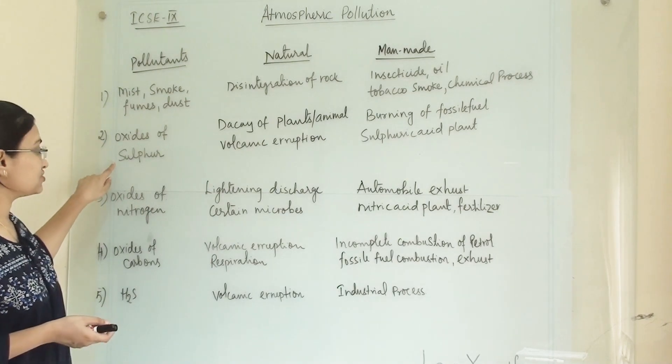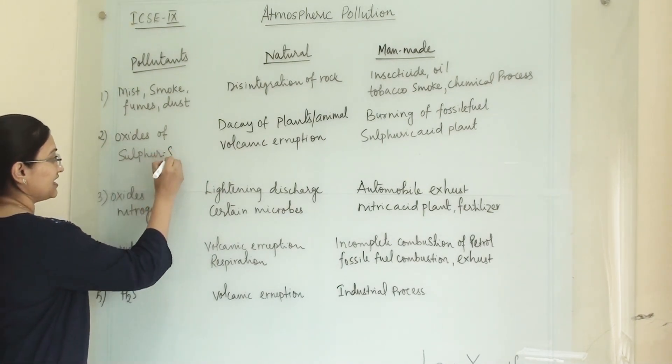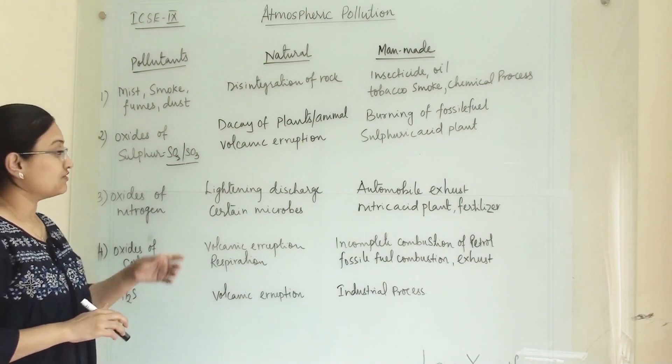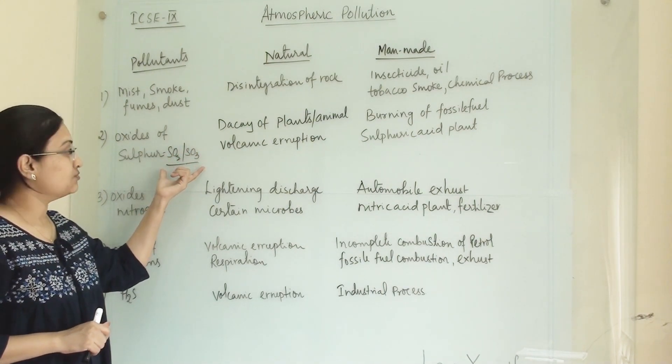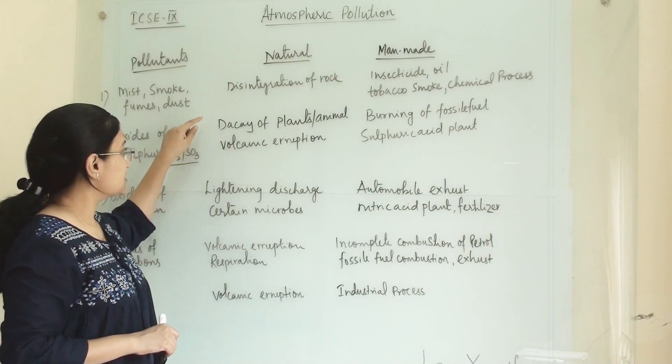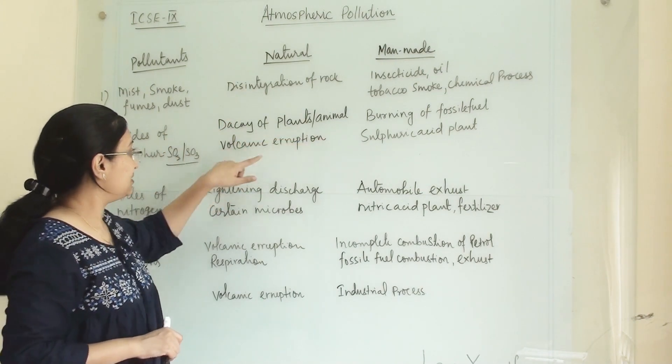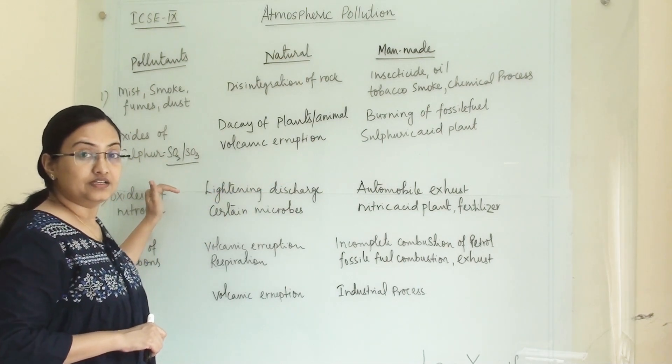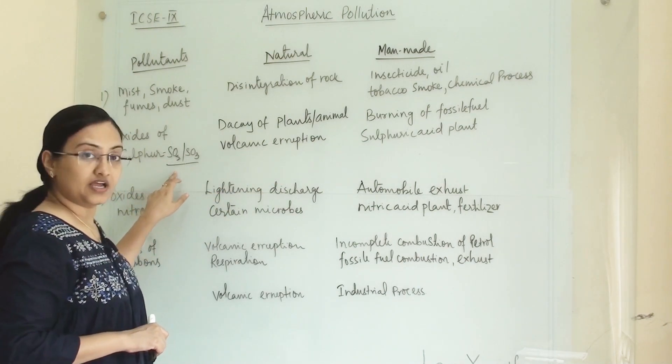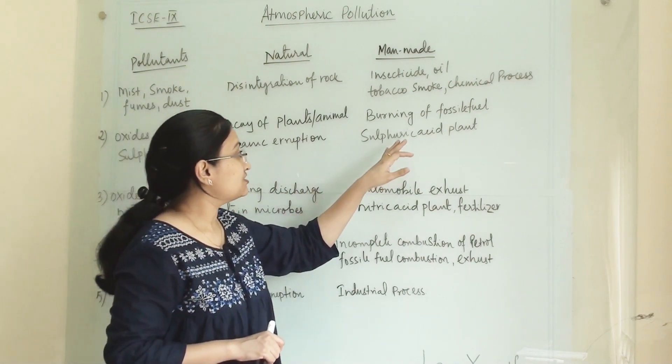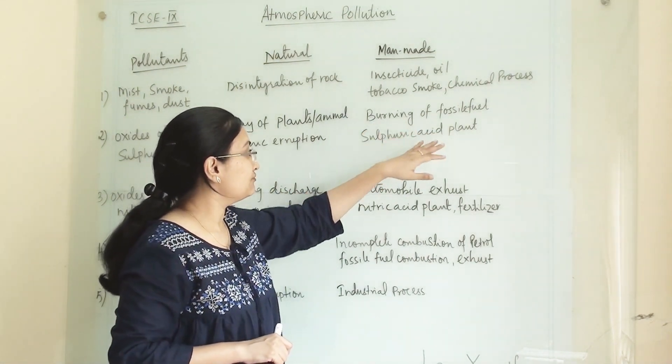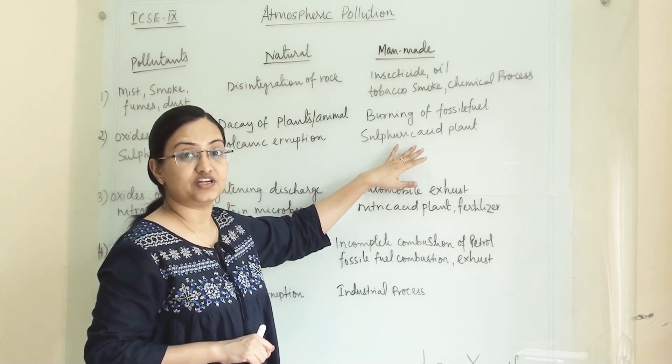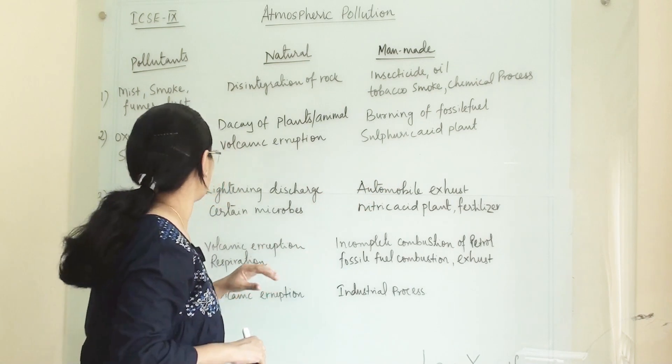Second is oxides of sulphur. Under oxides of sulphur, SO2 and SO3, these two oxides of sulphur are responsible for acid rain. Under natural sources, decay of plants and animals and volcanic eruption will lead to pollutants SO2 and SO3. Manmade activity like burning of fossil fuel and sulphuric acid plants are generating SO2 and SO3 in large amounts.